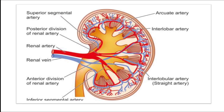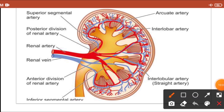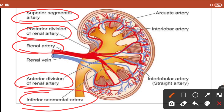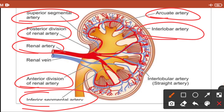Regarding the blood supply of the kidney: blood is provided by the renal artery, divided into superior and inferior segmental arteries. These divide into anterior and posterior divisions, which further subdivide to supply the renal pyramid via the arcuate artery. The arcuate artery further divides into interlobar arteries, whose branches are the interlobular arteries, which supply the cortex.